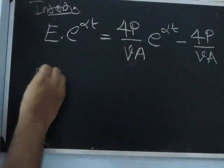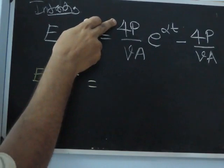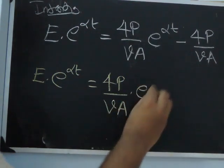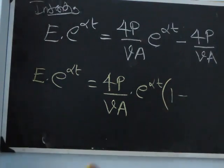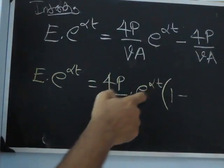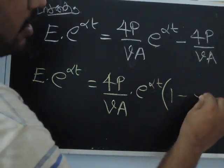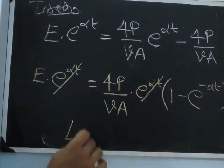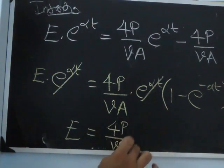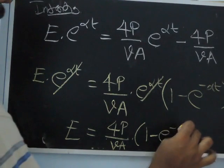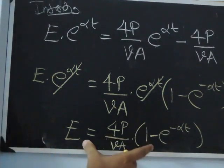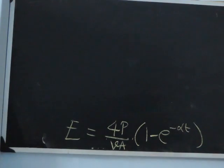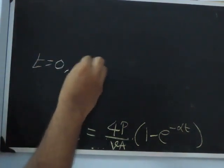Substituting K back into the equation and rearranging: I have E times e^(αt) equals 4P by VA times e^(αt) minus 4P by VA. Taking 4P by VA as a common factor gives 4P by VA times (e^(αt) minus 1), and dividing both sides by e^(αt) — equivalently multiplying by e^(-αt) — we get E equal to 4P by VA into (1 minus e^(-αt)).